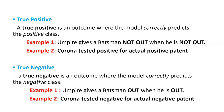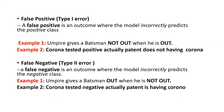Now, false positive — this is also called type 1 error. A false positive is an outcome where the model incorrectly predicts the positive class. Using the cricket example: an umpire gives a batsman not out when he is actually out — that is a type 1 error. Similarly, a corona test comes back positive but the patient does not actually have corona — that is false positive.